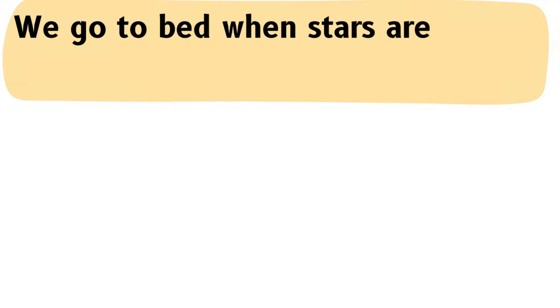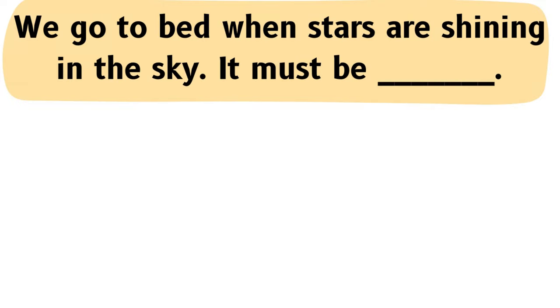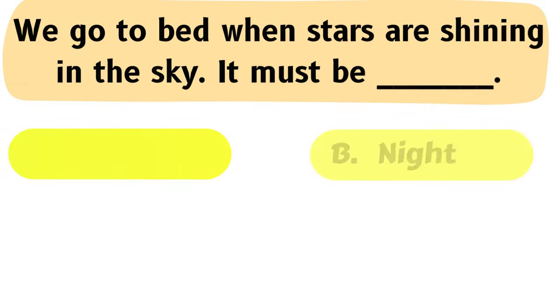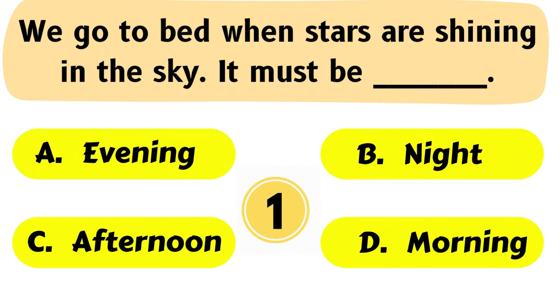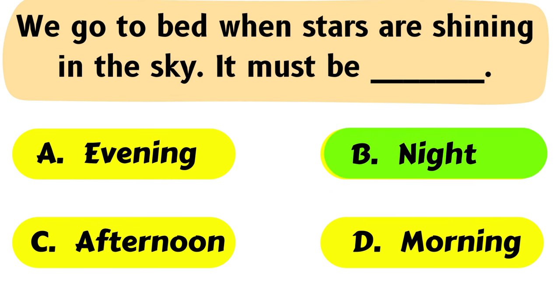Question No. 30: We go to bed when stars are shining in the sky. It must be ___. A. Evening, B. Night, C. Afternoon, D. Morning. The correct answer is Option B: Night.